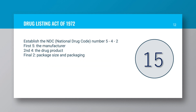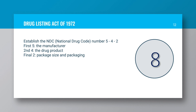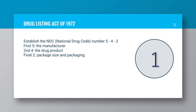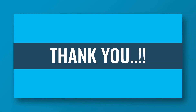Drug Listing Act of 1972: Established the NDC (National Drug Code) number in a 5-4-2 format identifying: 1. The Manufacturer, 2. The Drug Product, and 3. Package Size and Packaging.